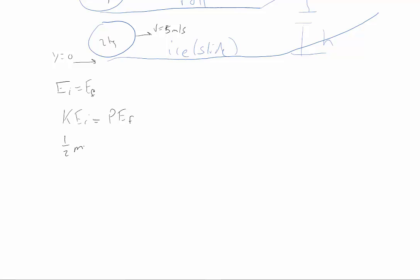Well, we have one-half mv squared is equal to mgh. Our m's are going to cancel out. We'll find that the height that it gets to is just going to be v squared over 2g.